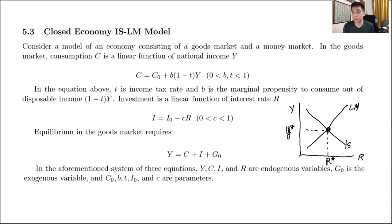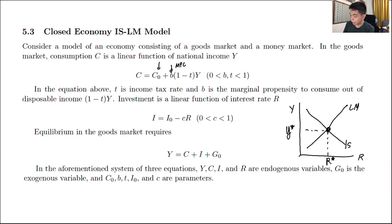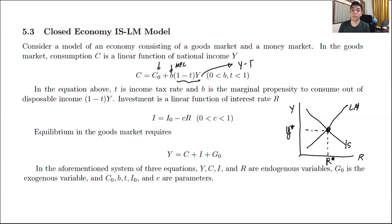The model is composed of the IS part and the LM part. In the IS part, which is the goods market, consumption C is some linear function of national income. So C equals C₀, where C₀ is autonomous consumption, plus b times (1-t)Y. Here b is your marginal propensity to consume and (1-t)Y is your disposable income — your income after taxes. Whatever's left after subtracting taxes times your marginal propensity to consume gives that value.